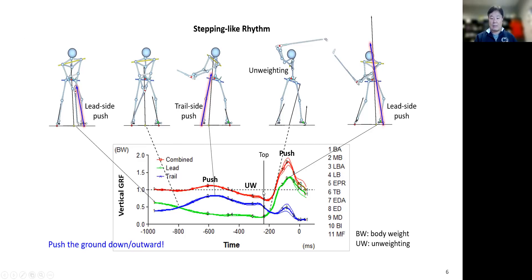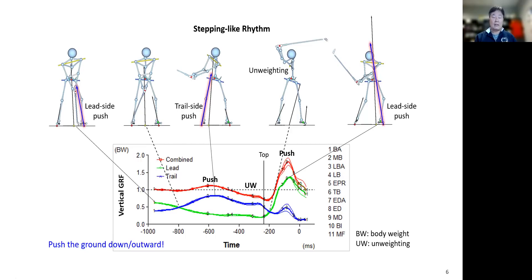Also at the top of the backswing, we are in the middle of unweighting, close to the unweighting peak. Unweighting decreases the vertical force. So you have everything you need to promote good interaction with the ground. The easiest way is using the stepping-like rhythm, which is why I use the two-step swing drill a lot — it is natural and automatically promotes really good interaction with the ground.